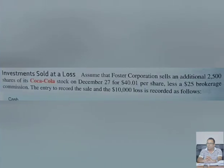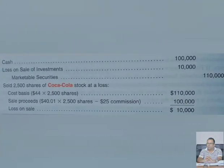Next is investment sold at a loss. If you sell below your cost price, you incur a loss. Loss is an expense and is always debited. In this example, Foster sells an additional 2,500 shares. We originally bought 4,000 shares total; after previous sales we still have remaining shares. We purchased at $44 and sold at $40.01, which means this is a loss.